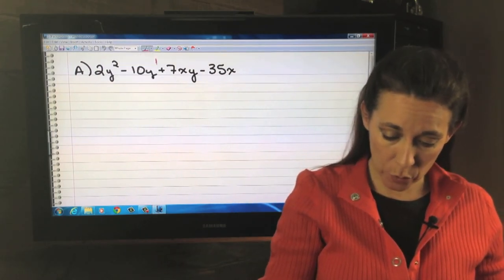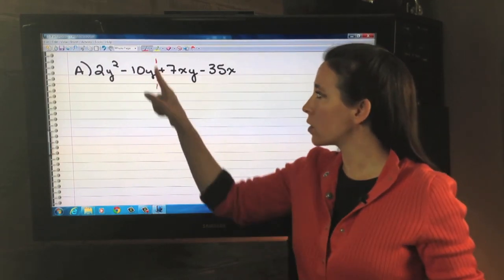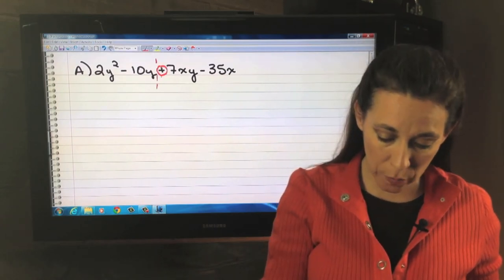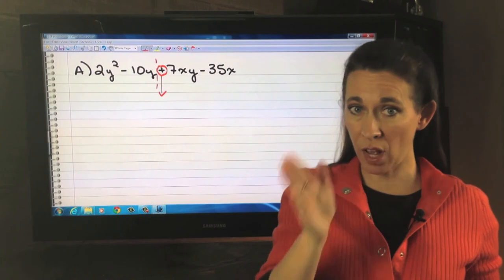So first thing we're going to do is we're going to kind of group these into 2 and 2. Notice I put the hash mark to the left of this plus sign, because this is going to help us determine what kind of factor we're going to take out, whether a GCF is positive or negative.